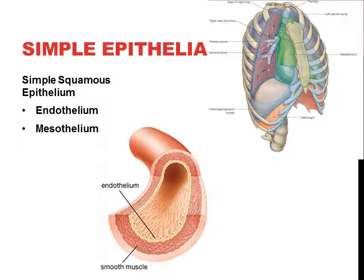There are a few types of simple epithelia. Simple squamous epithelium — 'simple' means one cell layer thick, 'squamous' means one layer of squamous cells. The name gives it all away. The main places you'll find simple squamous epithelium are the air sacs in the lungs and lining the vascular system.